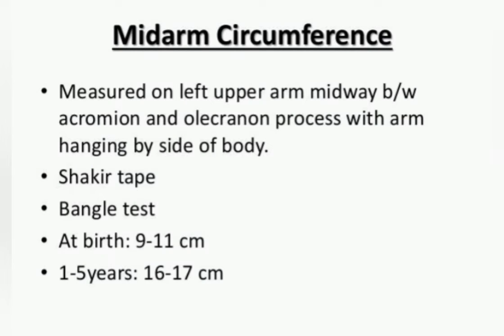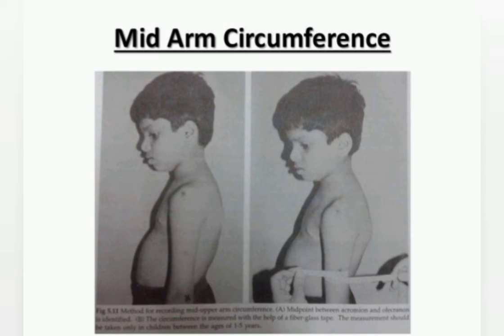The mid upper arm circumference is measured on the left upper arm, midway between the acromion and olecranon process, with the arm hanging by the side of the body. This is measured using the Shakir tape, or mid arm circumference tape, also known as the Bengal test. At birth, the measurement should be 9 to 11 centimeters, and for children between 1 to 5 years the measurement should be 16 to 17 centimeters.